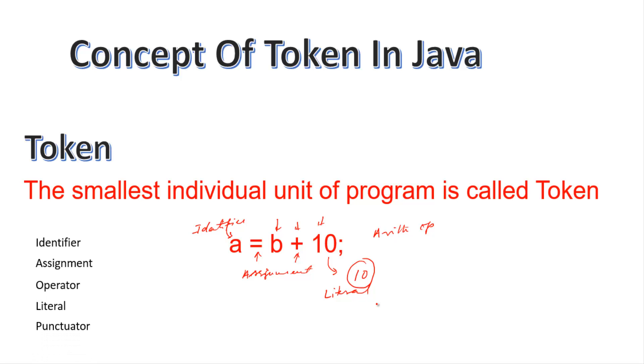And then the punctuator. Here is the punctuator. This punctuator is semicolon. Here is a punctuator, it's the end of the line. So each individual element is a token, and the total we call a syntax.